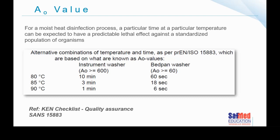Here's the definition of the AO value. For a moist heat disinfection process, a particular time at a particular temperature can be expected to have a predictable lethal effect. In a washer disinfector, we refer to an AO of more than 600, which means the disinfection needs to be at a higher level. At a bedpan washer, the AO value needs to be over 60. This is defined in ISO standard 15883. We adjust temperature and time parameters — if you set the temperature in the disinfection phase at 90 degrees, your rinse needs to be for one minute. At 80 degrees, the rinse phase needs to be longer to achieve the same lethality and level of high-level disinfection.